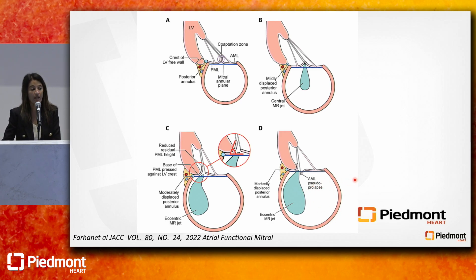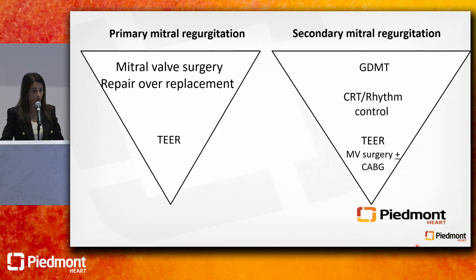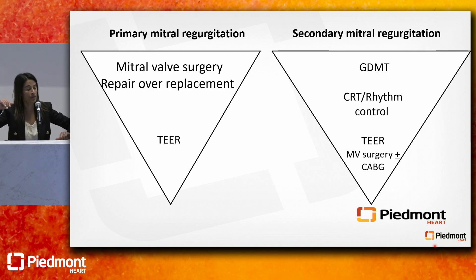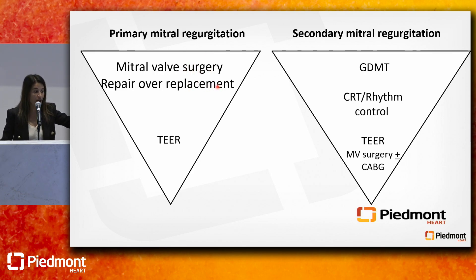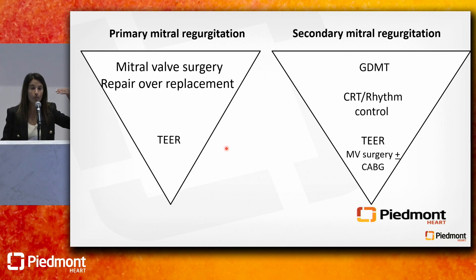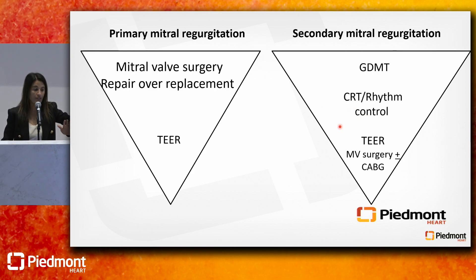Knowing that we have primary and secondary MR, from a high-level view — this pyramid I borrowed from Greg Stone — for primary MR it's class one for mitral valve surgery, repair over replacement. TEER edge-to-edge repair therapy has been upgraded from 2B to 2A. For secondary MR, it's GDMT, rhythm control with AFib, CRT, and if still symptomatic with significant secondary MR, TEER is also a 2A indication.